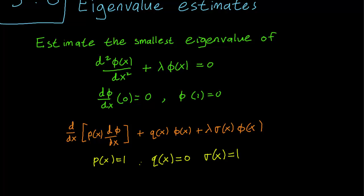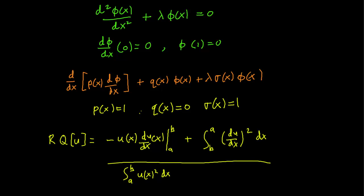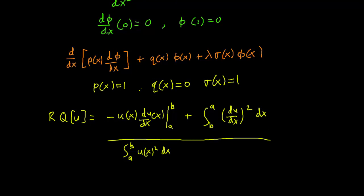This allows us to figure out what we need to plug into our Rayleigh quotient. Once we plug in p(x)=1, q(x)=0, and σ(x)=1 to our Rayleigh quotient, this is what we get. Remember that u obeys the same boundary conditions that φ does: du/dx(0)=0 and u(1)=0.